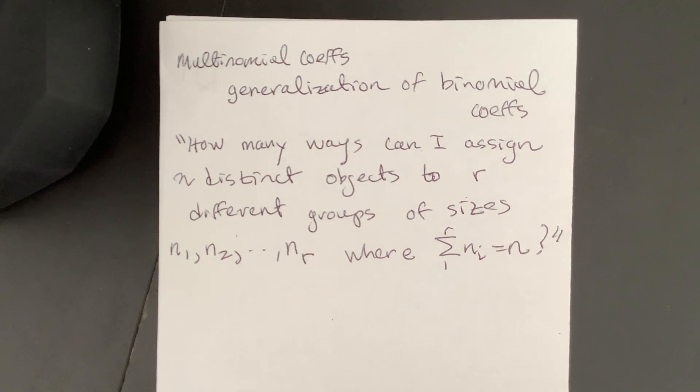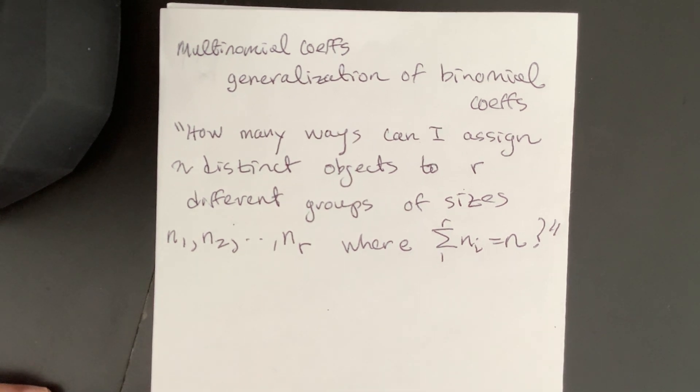Okay, so it's just a generalization. When r is 2, it is the binomial coefficient. It's pretty interesting, the numbers you get here. So how many ways can I assign n distinct objects to r different groups of sizes n1 through nr where they add up to n.